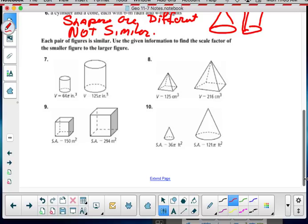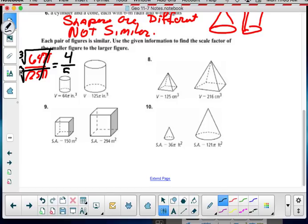In this case, they give me volume. So the volume from one to the other is 125 pi, 64 pi. And pi's cancel. They become 1. And remember, I have volume right now. I need to take the cubic root to get to my scale factor, which is 4 to 5. They have used the given information to find the scale factor of the smaller figure to the larger figure. Well, I've got it. This is the scale factor of smaller to larger. Remember, smaller would have to be on top.